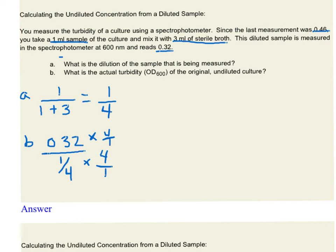One-fourth times 4 over 1 gives you 1. 0.32 times 4 gives you 1.28. So 1.28 is the OD600 for our undiluted culture.